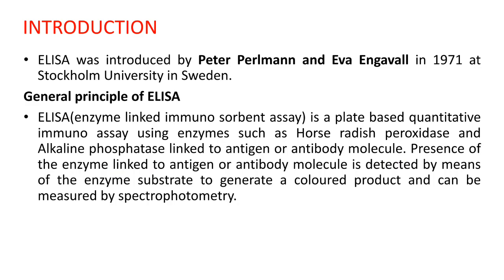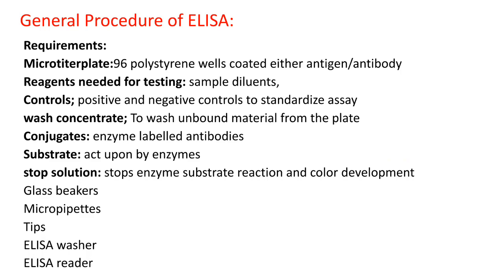In ELISA, enzymes are labeled to the antigen or antibody, which will bind with the specific antigen or antibody we want to detect. After the labeled antigen binds with the antibody, the immune reaction is detected by adding the substrate. The substrate acts upon the enzymes already present and gives a color product, which is quantified by spectrophotometry.